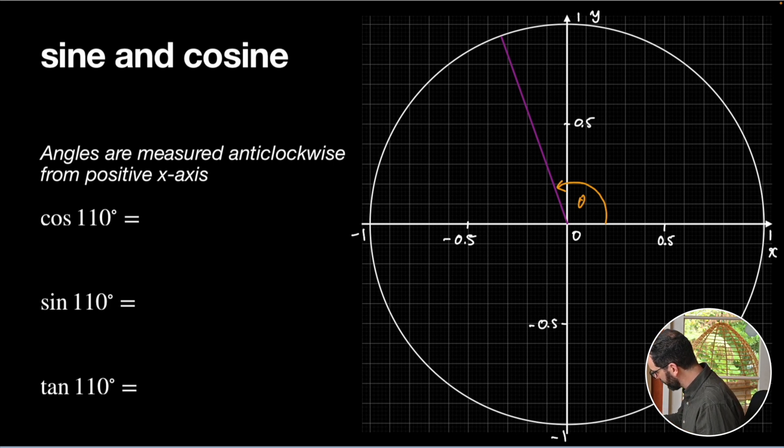So, cosine of an angle is simply the x-component of this point up here. So, cos θ, let's just make a little note at the top, shall we, is just the x-component of our point. So, for example, I can see that cosine of 110 degrees, just by looking at my picture here, that looks like about negative 0.34, shall we say. So, I can just, just by reading off my picture, I can see that cosine of 110 degrees is around about negative 0.34.